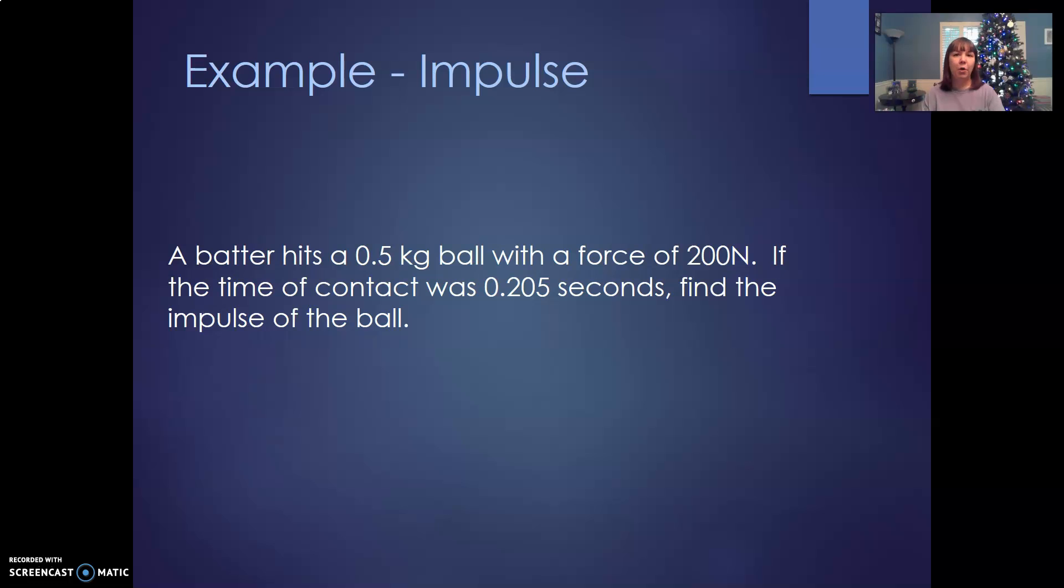So for impulse, you apply a force and you apply it over a period of time. And the longer you apply that force, the more impulse you get. So let's look. A batter hits a half kilogram ball with a force of 200 newtons. If the time of contact was 0.205 seconds, what's the impulse on the ball? We'll take newtons, our force, times our time. So 200 times 0.205, we end up getting 41 newton seconds.